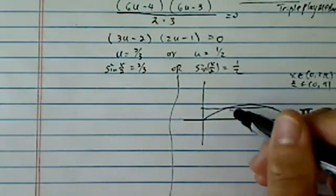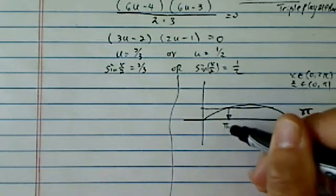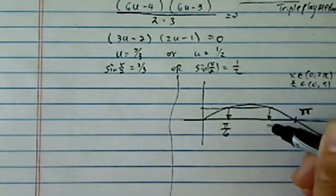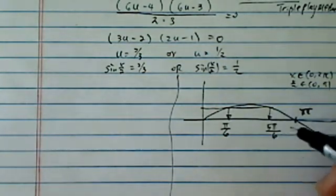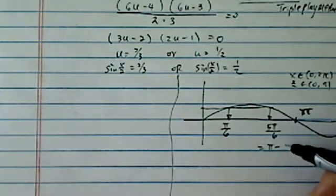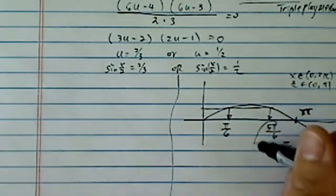And then a half here, it's a little off scale here. This is π over 6. This is 5π over 6, which is really π minus π over 6 for this one.